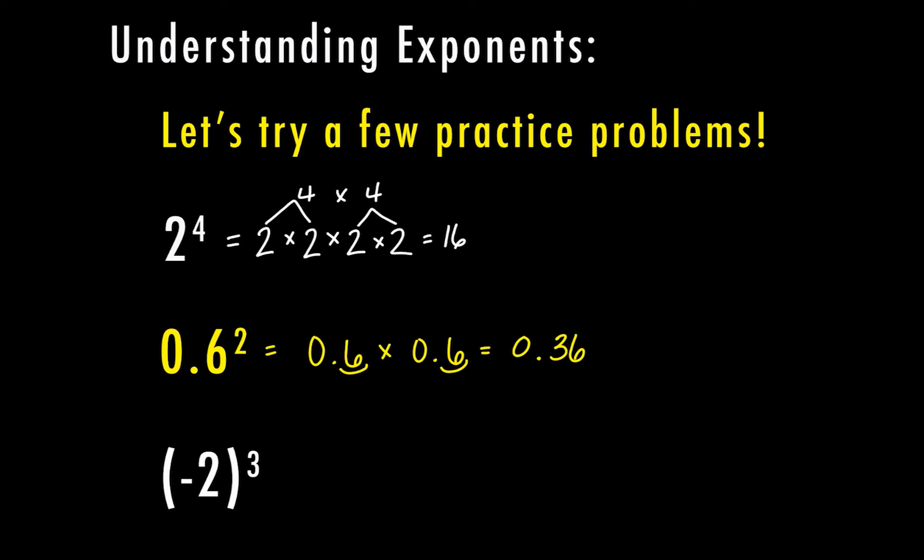For my third practice problem, we have negative 2 to the third power. Because the entire negative 2 is in parentheses, that means I'm going to be multiplying negative 2 times negative 2 times negative 2. This is important when we're solving with negatives. A negative 2 times a negative 2 is a positive 4. Positive 4 times negative 2 is negative 8. So if you have an odd number of negatives, your answer is going to end up being negative. If you have an even number of negatives, they're going to cancel each other out and be a positive.